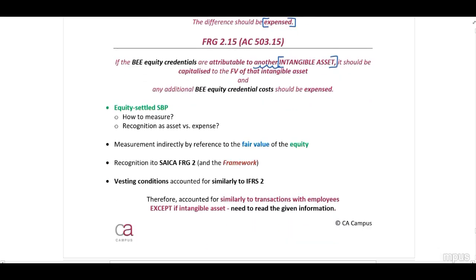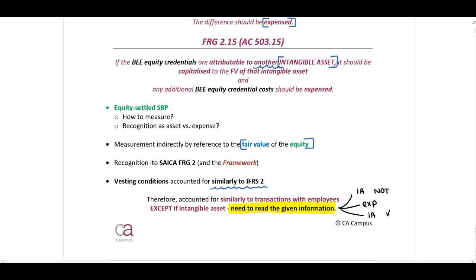If it's equity-settled, how are we going to measure this — equity versus expense? You will have to debit the expense or asset and credit share-based payment reserve, measuring indirectly by reference to the fair value of our equity. If there are any vesting conditions, you will do this very similarly to the rules of IFRS 2. It is extremely important that you read the given information to distinguish whether this is an intangible asset that cannot be recognized — in which case you expense it — or one that can be recognized. Taxation and disclosure principles will be covered through examples 10 and 11.